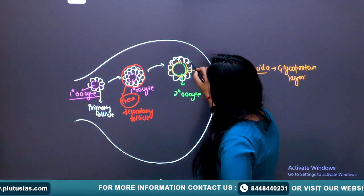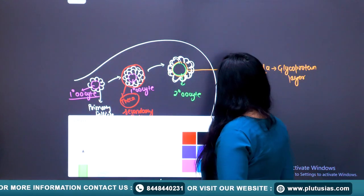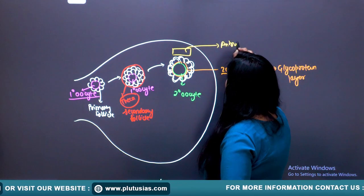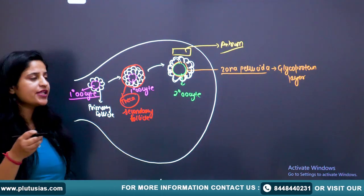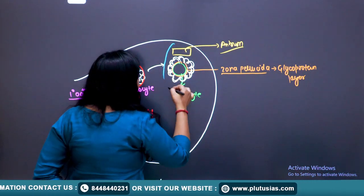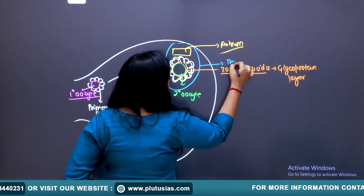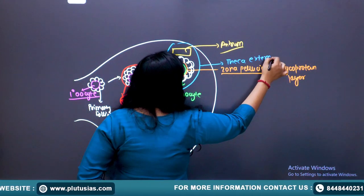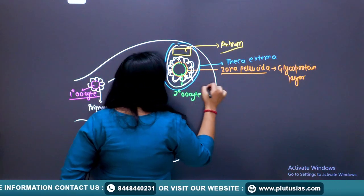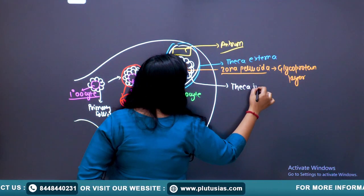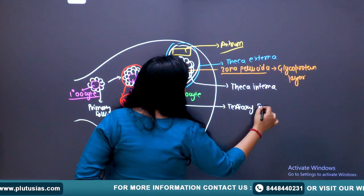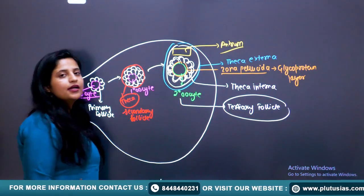The follicular cells secrete a fluid-filled cavity known as the antrum. The theca divides into two layers: the theca externa (outer layer) and the theca interna (inner layer). This is the structure of the tertiary follicle.